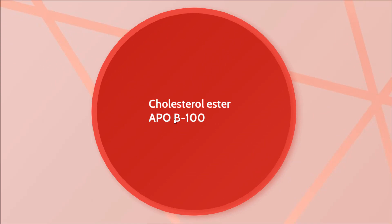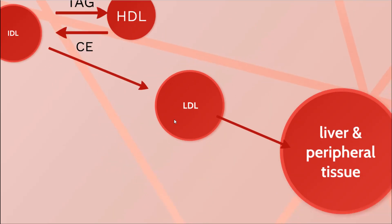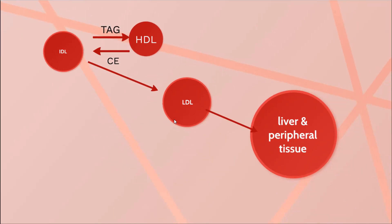In the circulation, ApoB100 in LDL activates LDL receptors situated in the liver and peripheral tissue. After LDL receptors are activated, they uptake LDL inside the cell by the process of endocytosis.